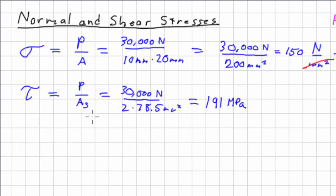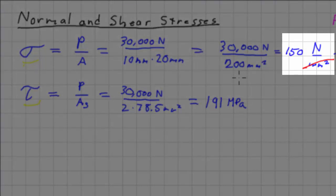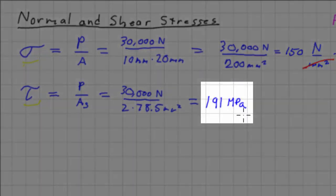They both have very similar formulas, force over area, but the normal stress is about the area that is normal to the force, and the shear stress considers the area that's parallel to the force. We also considered this was double shear. In our calculations, the normal stress ended up being 150 megapascals, and the shear stress, 191 megapascals.